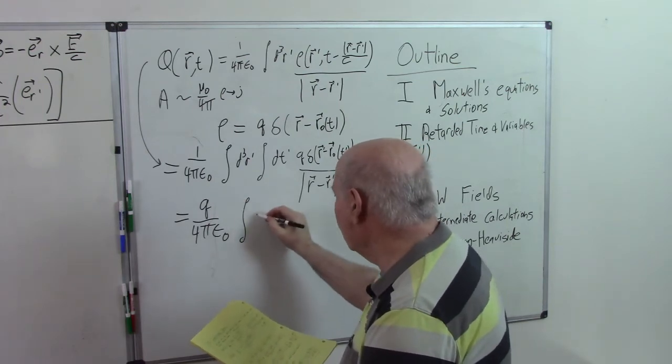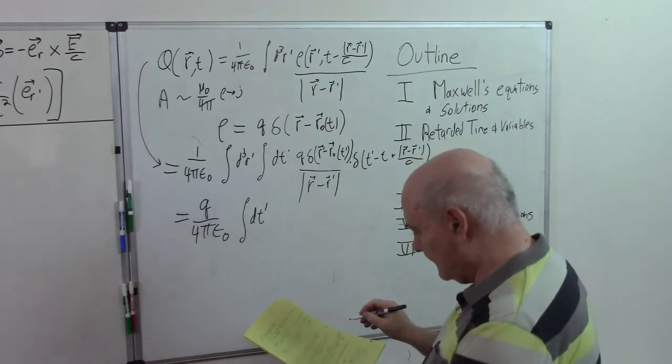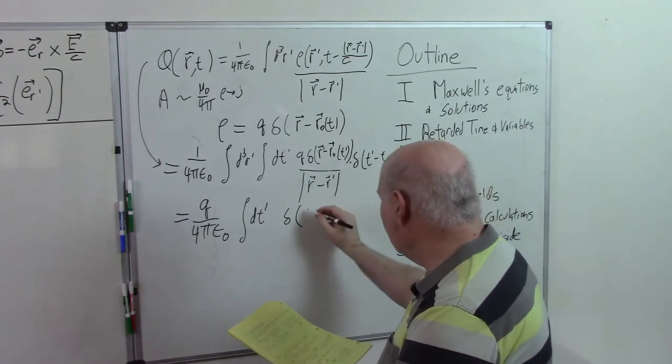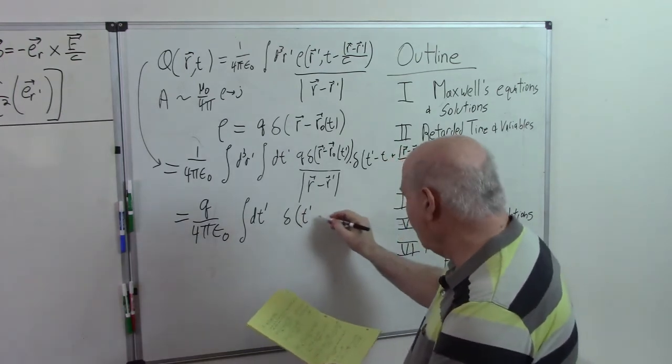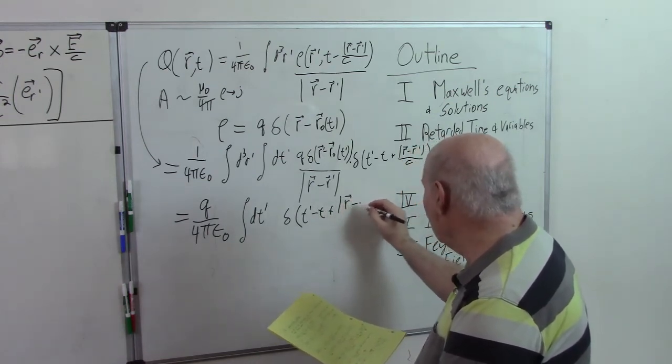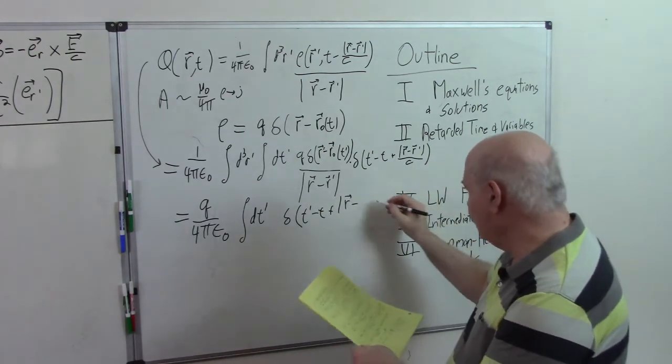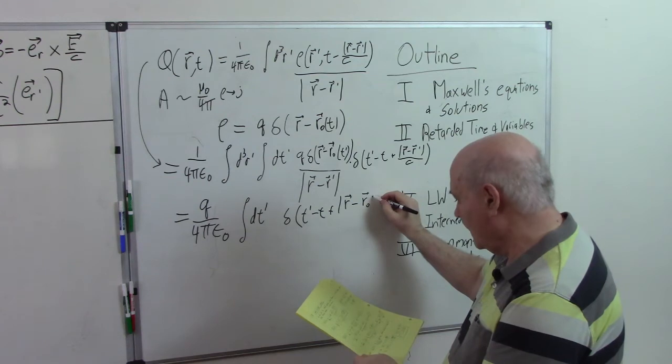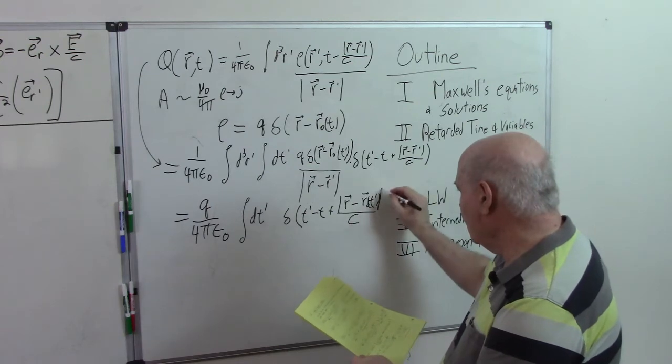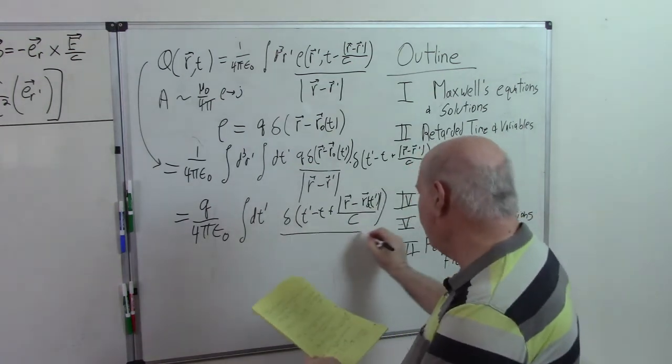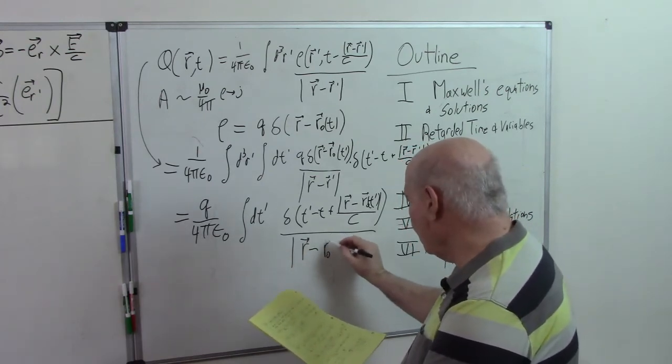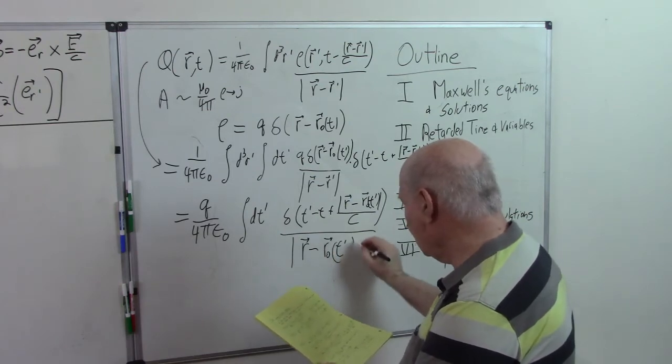The integral, we're left with the t' integral. And now we have delta over here, t' minus t plus the absolute value of r. And instead of r', we now have r_0', r_0 of t' over c divided by the absolute value of r minus r_0, t'.